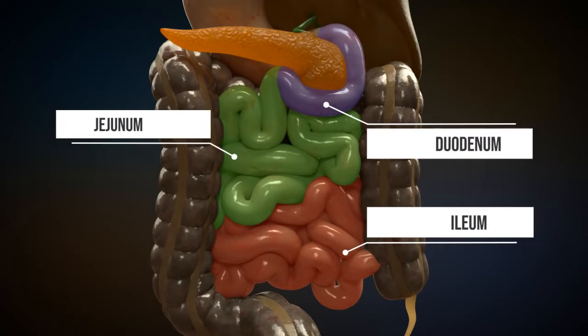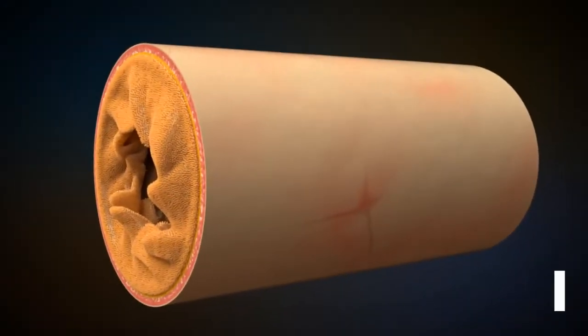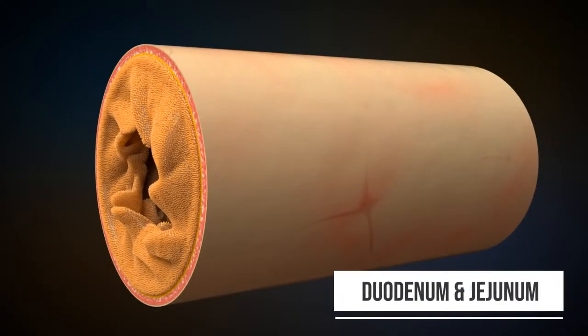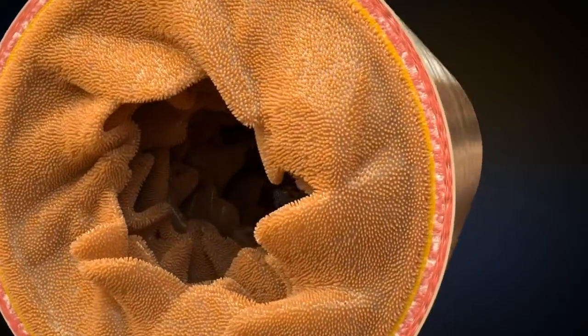The duodenum and the jejunum have circular folds to increase the contact surface with the food. These circular folds extend about one centimeter into the lumen of the small intestine.